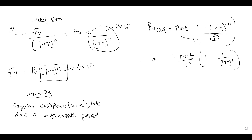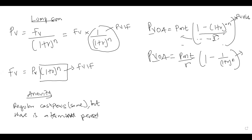If you see the second formula in your slides, don't think the first one we have been using is wrong — both are correct. I prefer the first one because the bracketed portion is called the present value interest factor of annuity, which can be read from a table. With the second formula, that factor alone cannot be read from the table. Both mean the same thing, but I prefer the first because we can read the factor directly from the table.